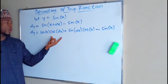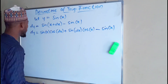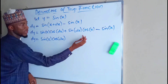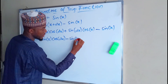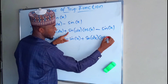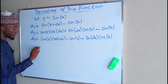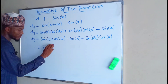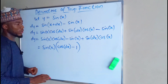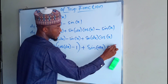In my previous lesson I showed you how to obtain these ratios of sum and difference of angles, so you can check the description below. So dy equals sine x cos dx minus sine x, then add sine dx cos x. This term and this term have sine x in common, so we factorize sine x. Then in the bracket we have cos dx minus 1, plus sine dx cos x.